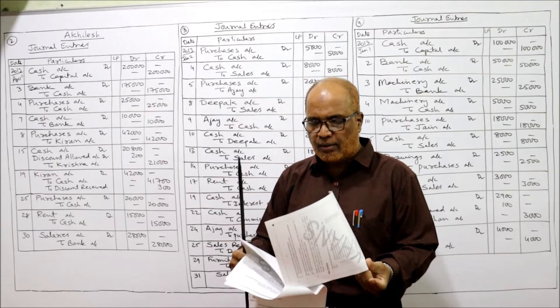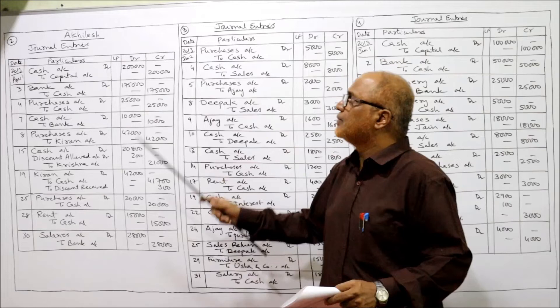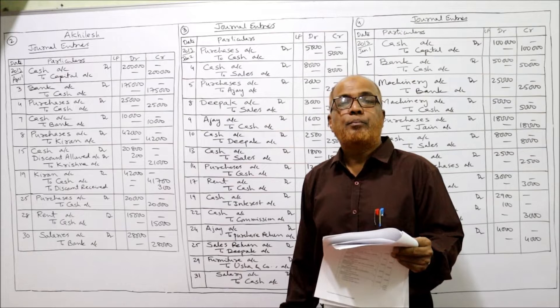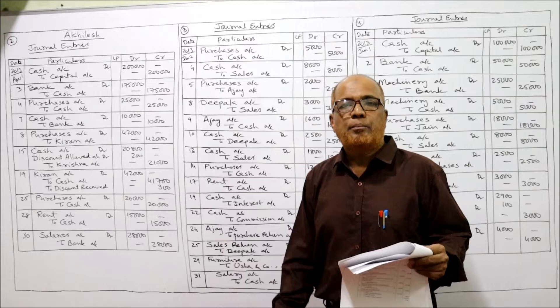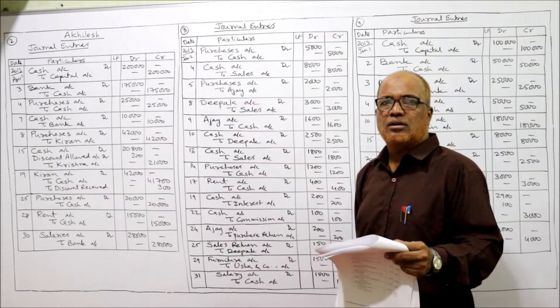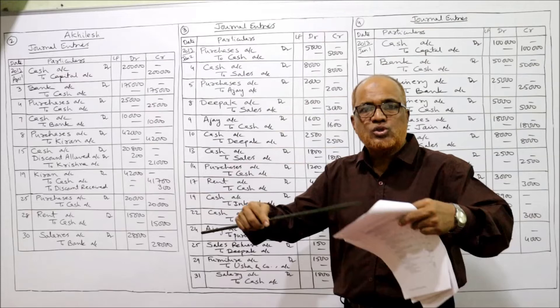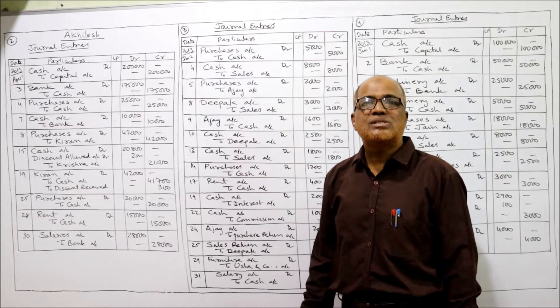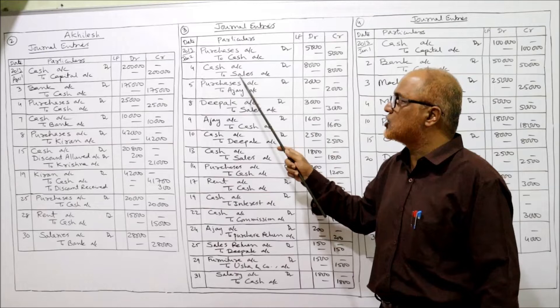Now moving to problem number three: journalize the following, 2013 January 2nd. Journal entries: date, particulars, LF, debit, credit. January 2nd: purchased goods for cash — cash is going out so cash is credited, purchased goods so purchases should be debited. Purchases account debit to cash 5,000. Next, 4th January: sold goods for cash — cash is coming in, so cash account debit to sales. Being the goods sold for cash.